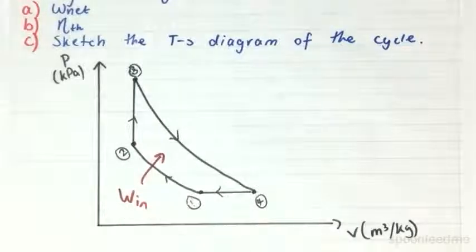Then process 2 to 3 is the isovolumetric heat addition, which is Q in. And then process 3 to 4, we have the work that is extracted from the system.